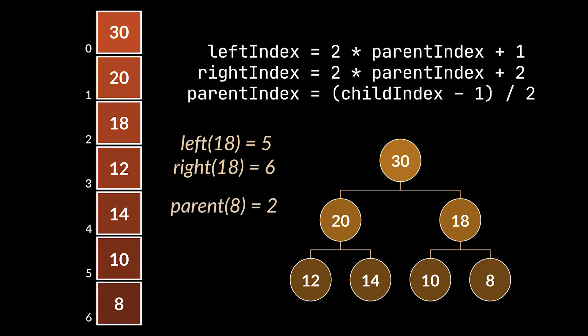Additionally, if we take node 8 with its index 6, we subtract 1 from it and divide it by 2, we will obtain 2, which is the index of 18 — the parent of 8. Now let's switch to the operations offered by heaps, as these are what we will actually be implementing.